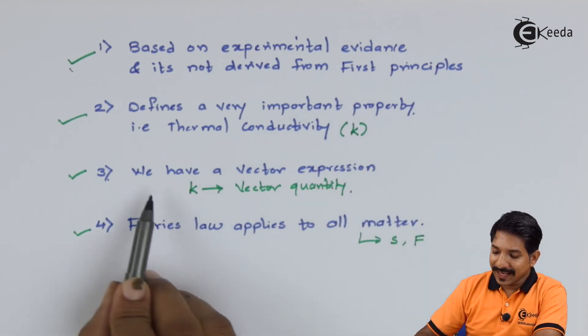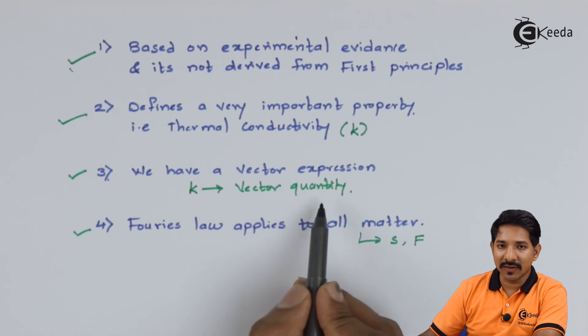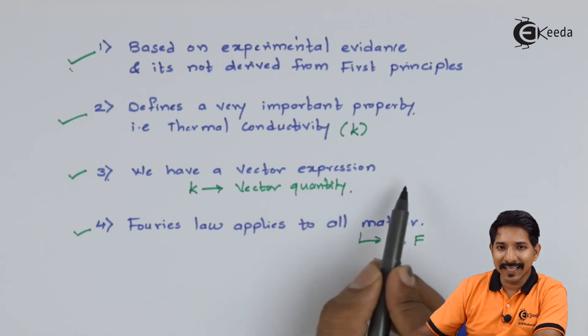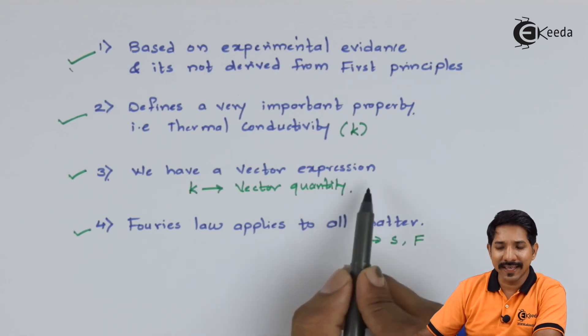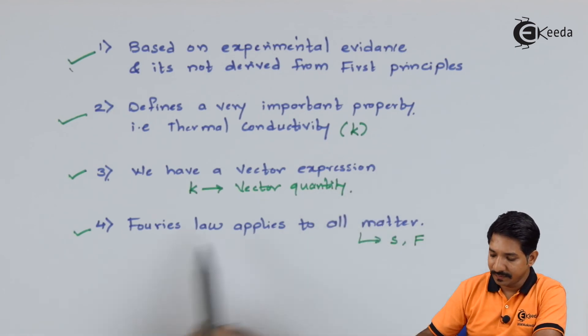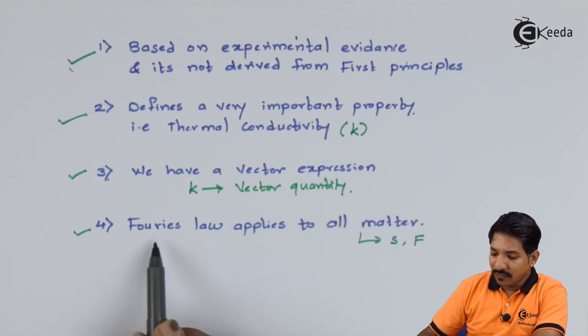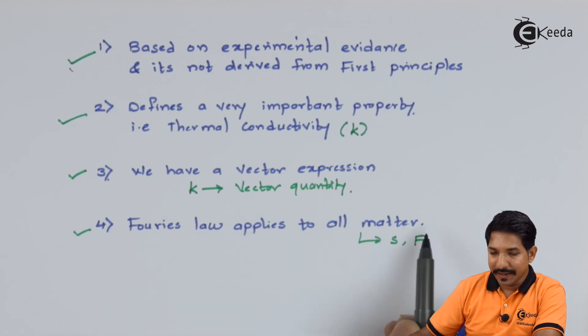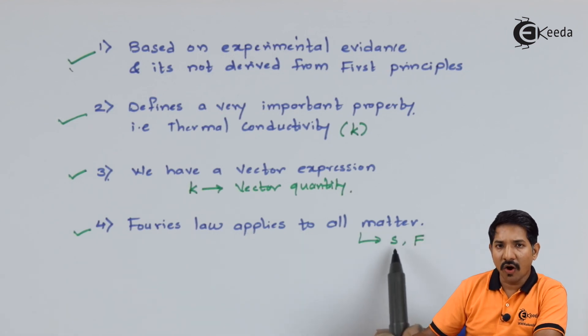Then we have seen that this thermal conductivity is a vector quantity. So the Fourier's law does not talk about only in one direction, it talks about in any given direction. So it is a vector expression. And the fourth one, the Fourier's law applies to all matter may it be solid or fluid.